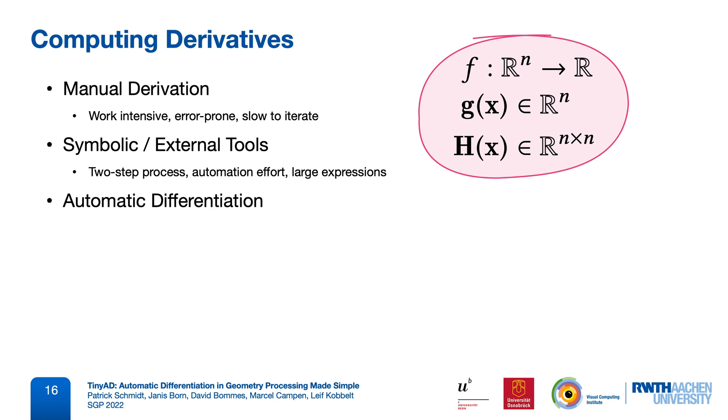Automatic differentiation, on the other hand, means that we can implement our objective function directly in the target language, and its derivatives are computed for us. There are many software packages for this, but it's not easy to find the right one for a specific task. Often, only a subset of language features is supported.